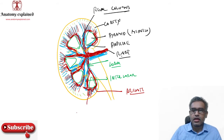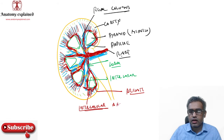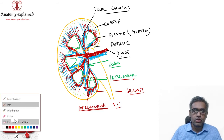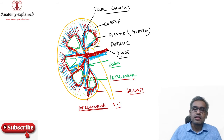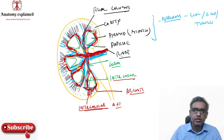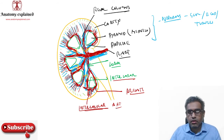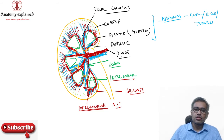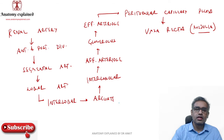As the interlobar artery reaches the junction of the cortex and medulla, it divides into the arcuate arteries. The arcuate artery runs like an arc around the base of the pyramid, at the corticomedullary junction — superficial to it is the cortex and deep to it is the base of the pyramid, the medulla. The arcuate artery then gives off interlobular arteries that go into the territories of the nephrons.